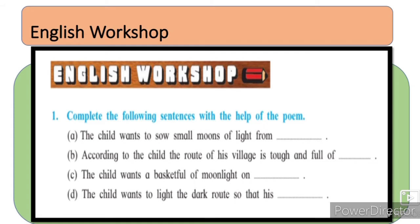English workshop کی پہلی activity ہے: 'Complete the following sentences with the help of the poem.' کچھ sentences دیے ہوئے ہیں جنہیں poem کی مدد سے complete کرنا ہے۔ پہلا: 'The child wants to sow small moons of light from' — یعنی بچہ چاند کے بیج بونا چاہتا ہے جو روشنی دے — کہاں سے کہاں تک، اس کا جواب اگلے clip میں دیکھیں۔